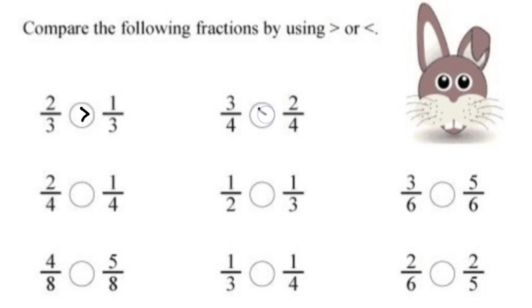The fraction with the greater numerator has the greater value. Now in the next question, 2 by 4 and 1 by 4 — the denominators are same. Again, the fraction with the greater numerator is the greater one. So 2 by 4 is greater, and we will put the greater sign here.